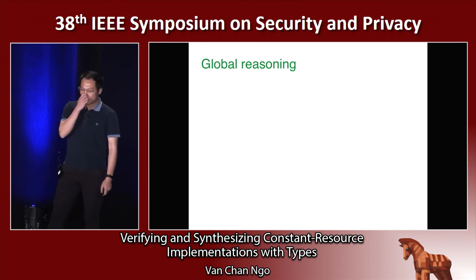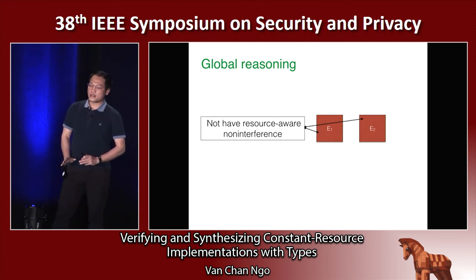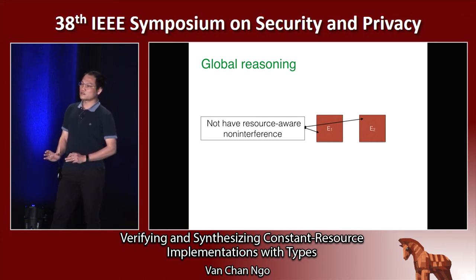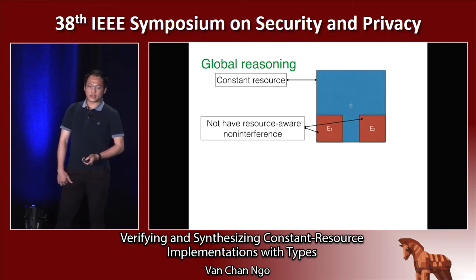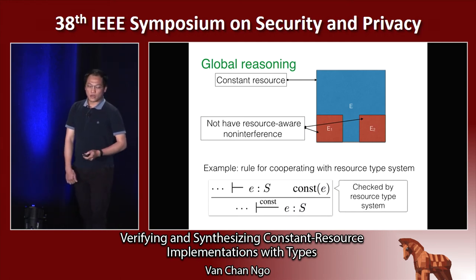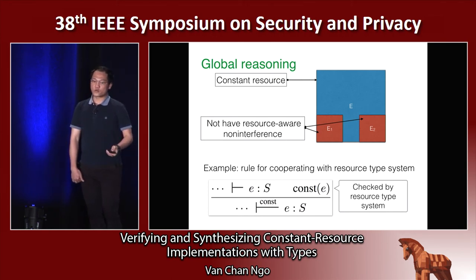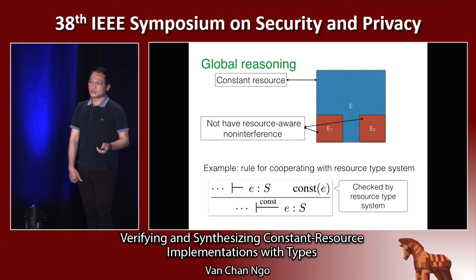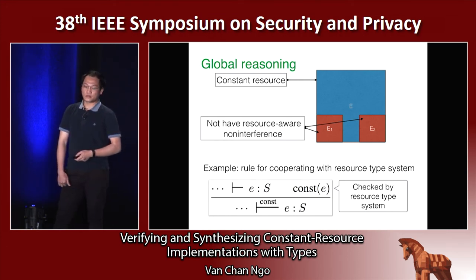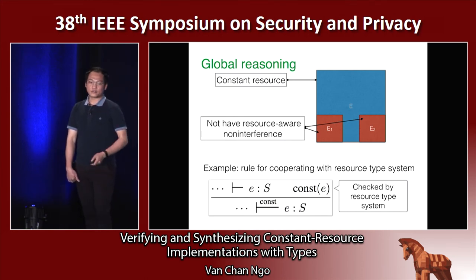About global reasoning: assume that I have two sub-expressions E1 and E2 that do not individually have the resource-aware non-interference property, but the super-expression over E1 is a constant resource consumption expression — then I can conclude that the super-expression satisfies resource-aware non-interference. Our security type system captures this global reasoning by cooperating with the resource type system: if expression E satisfies the classic non-interference property and is well-typed in the resource type system (meaning it has constant resource consumption), then I conclude that expression E satisfies the resource-aware non-interference property.